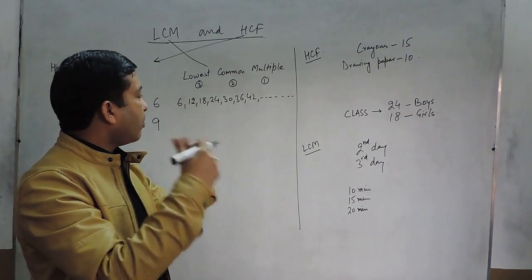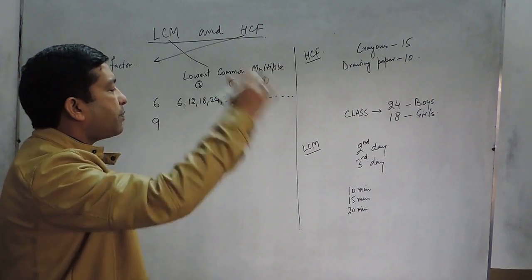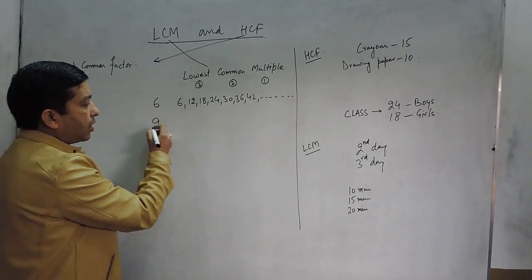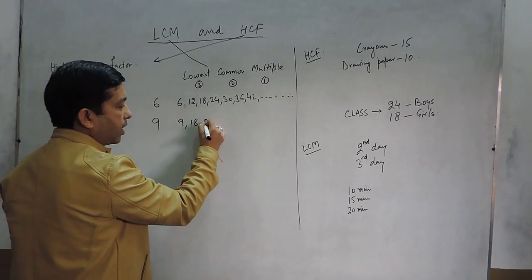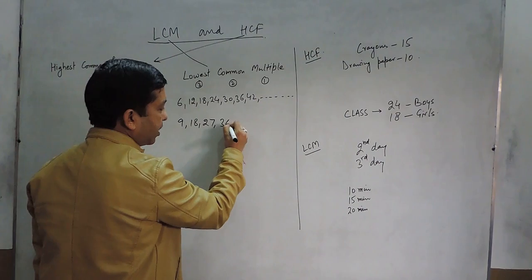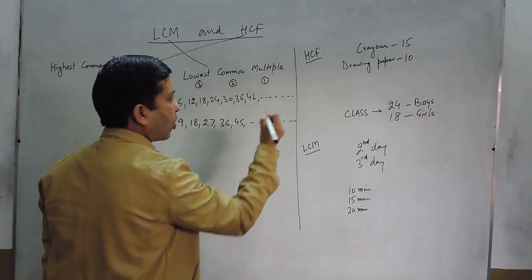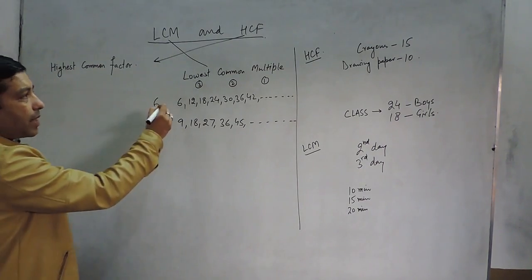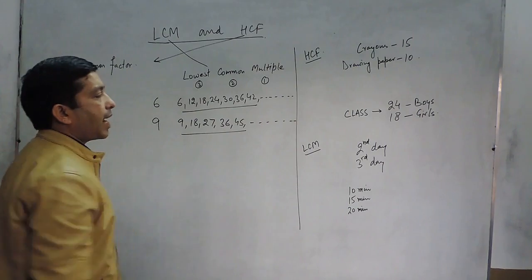Infinity means the point which is not known to us — it keeps on going. When we talk about 9, the multiples of 9 are again the table of 9: 9, 18, 27, 36, 45, and so on, going up to infinity. These are the multiples of 6 and 9.